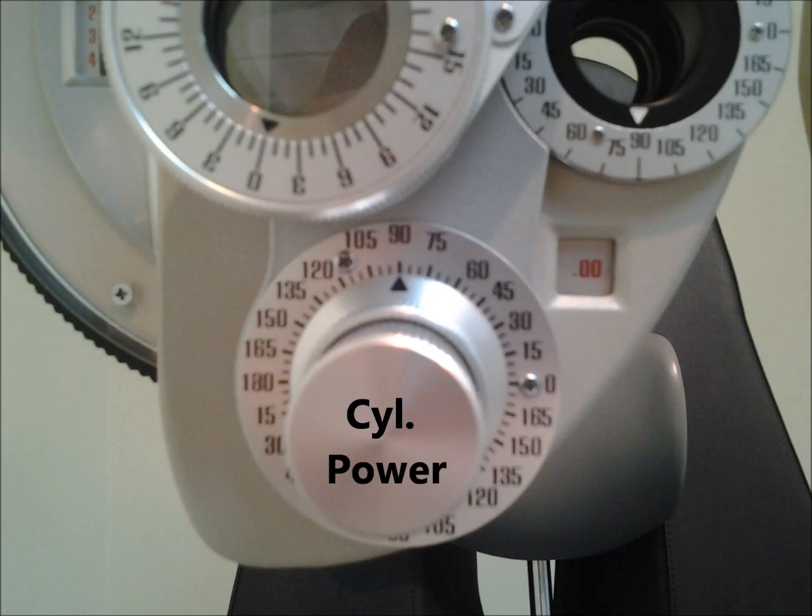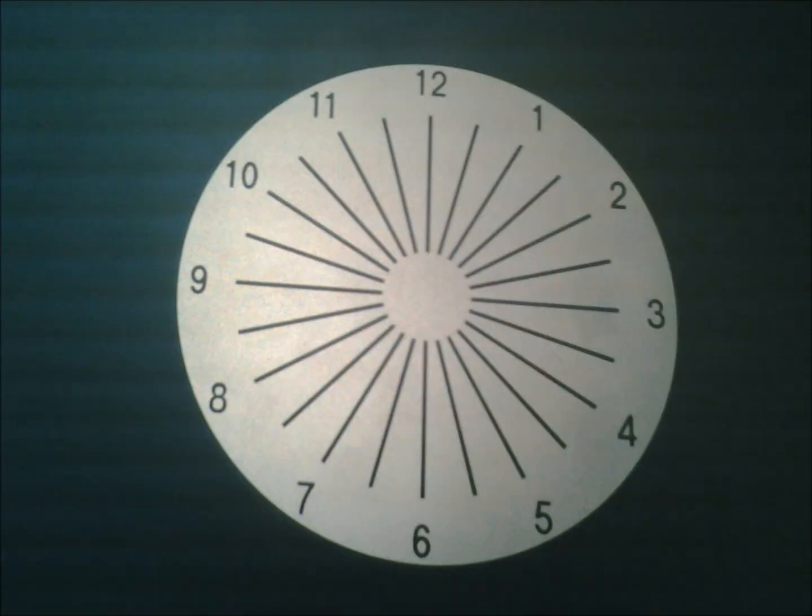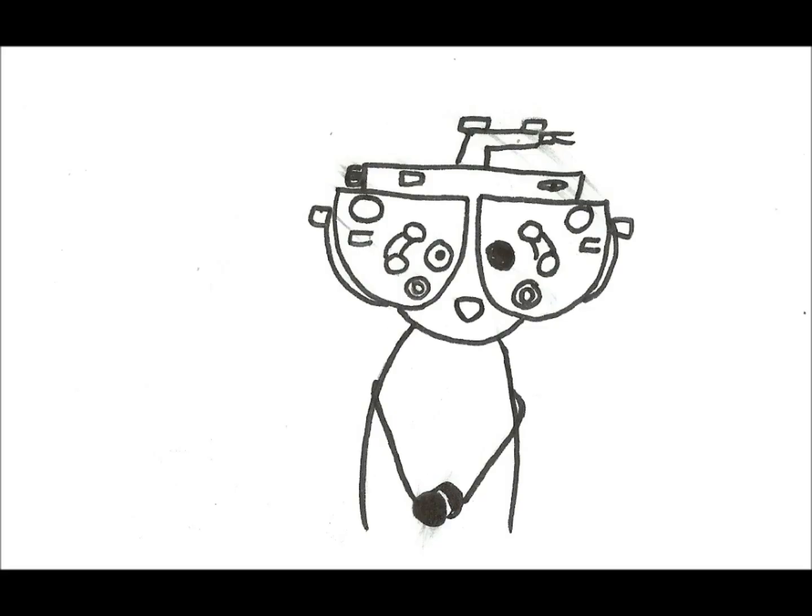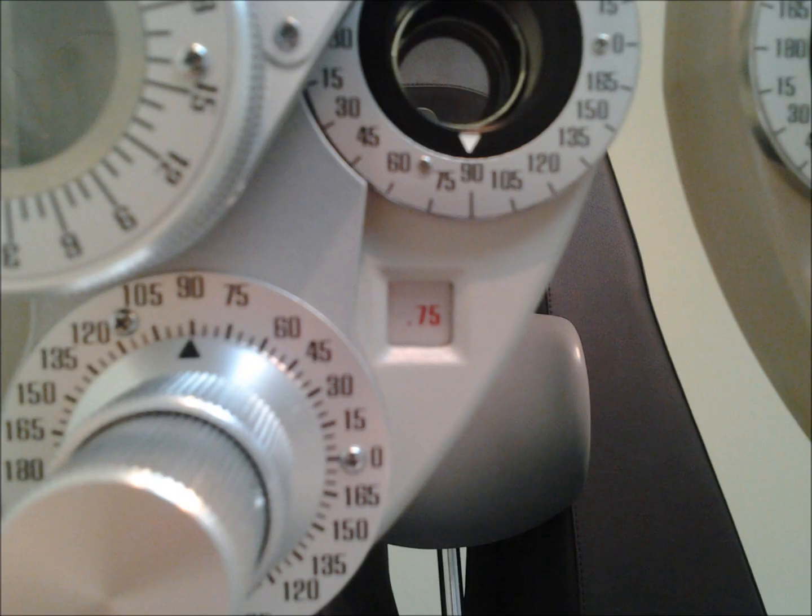Now it's time to find the cylinder power. With your hand on the cylinder power knob, tell the patient you're going to change the lenses and ask them to tell you when the lines seem equally clear. You add minus quarter cylinder diopters and ask if they see them equal. Mr. Patient says that now all the lines are equal at minus 0.75 DC, and that's your cylinder component, minus 0.75 axis 90.